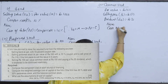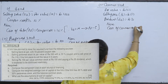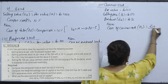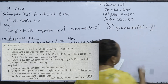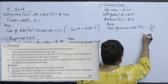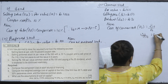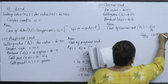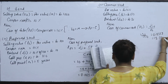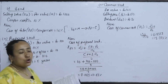The cost of common stock formula, when growth rate is zero, is D0 divided by P0. That gives us 20 divided by 150 = 0.1333, which means the cost of common stock is 13.33%.